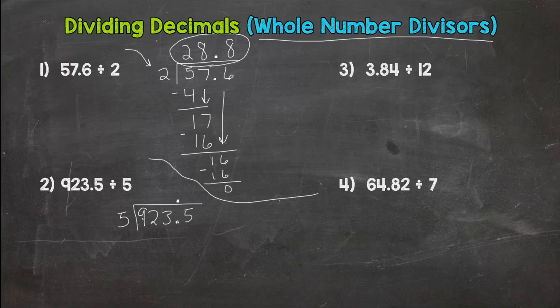So 9 divided by 5, 1. 1 times 5 is 5. Subtract, I get 4. Bring down this 2. Got to think of my five facts here. How many groups of five can I pull out of 42? How close can I get? Well, 8. That gets me to 40. 8 times 5 is 40. Subtract, I get 2. Bring down my 3.